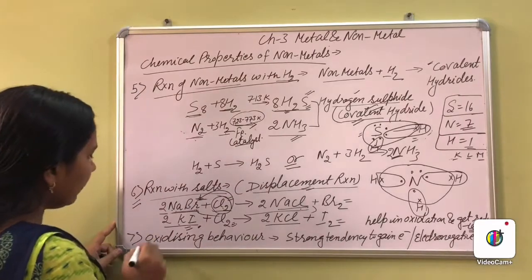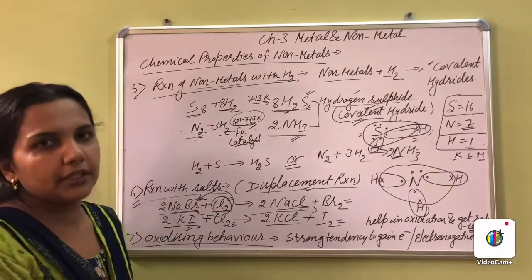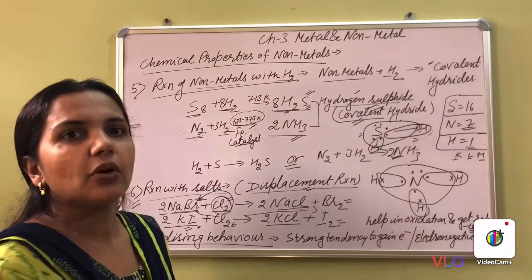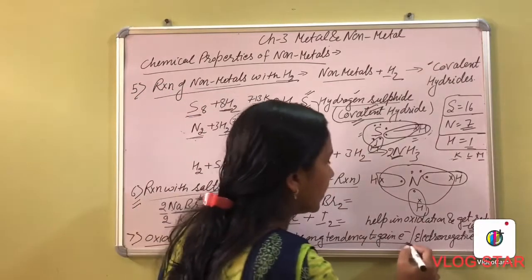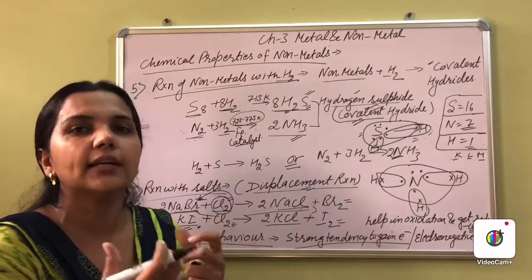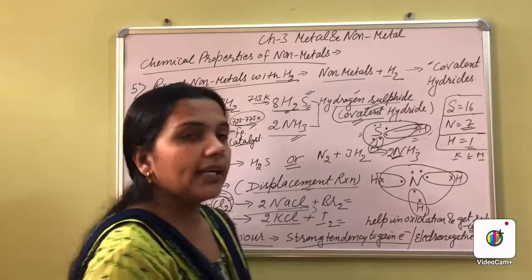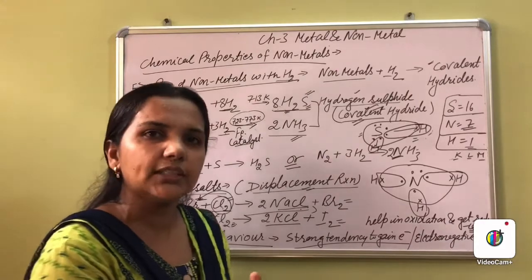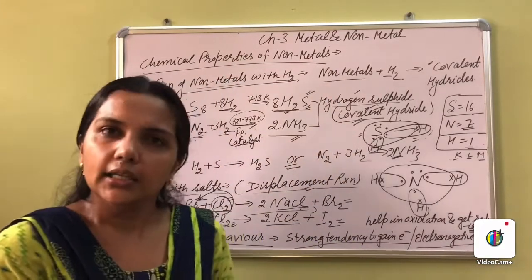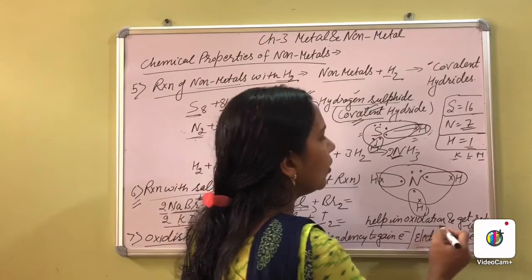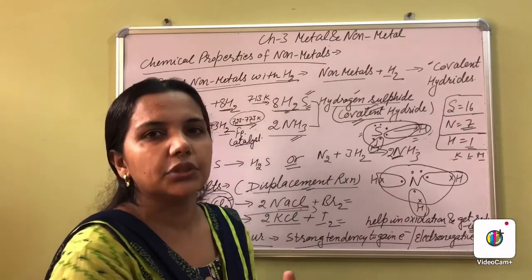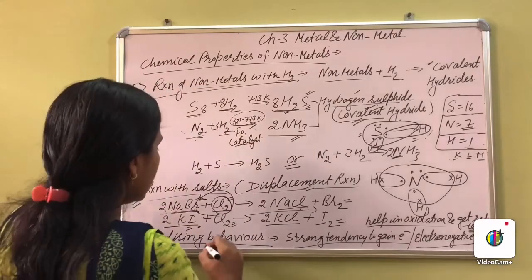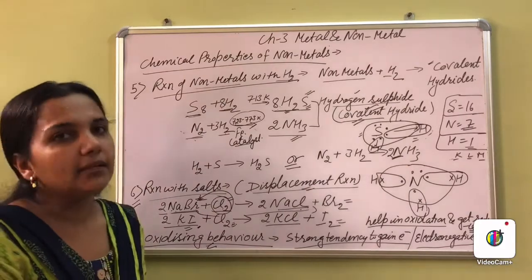The seventh property is oxidizing behavior. Non-metals have oxidizing behavior — they are oxidizing in nature. Why? Because they have a very strong tendency to gain electrons. When they gain electrons from something, a negative charge appears, meaning they become electronegative in nature. They help in oxidation, and they themselves get reduced. So non-metals have a strong oxidizing behavior.